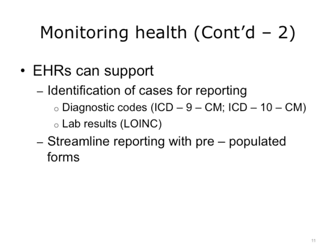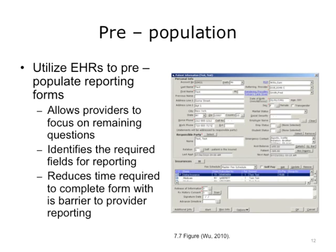As providers increasingly adopt EHR systems, public health agencies have an opportunity to leverage these systems to improve provider reporting. EHRs can prompt or alert providers of the need to report conditions when predefined criteria are met consistent with a reportable condition. These criteria may include a mix of diagnosis codes such as ICD-9-CM and ICD-10-CM, laboratory results, and symptoms. EHRs can also provide pre-populated reporting forms that reduce the burden of reporting by filling in key demographic data on the patient and provider.